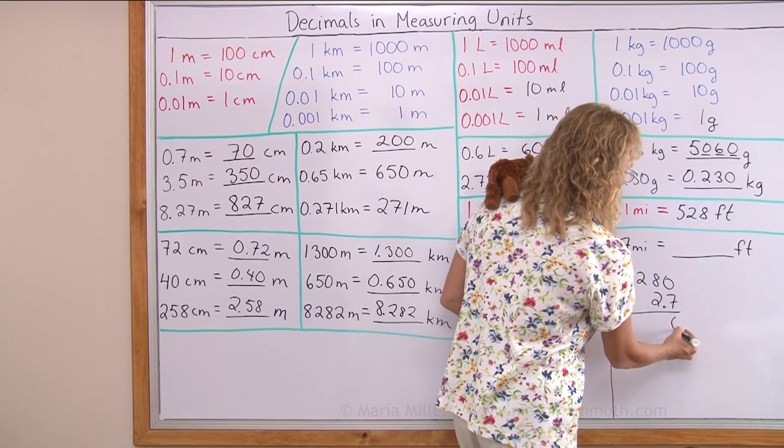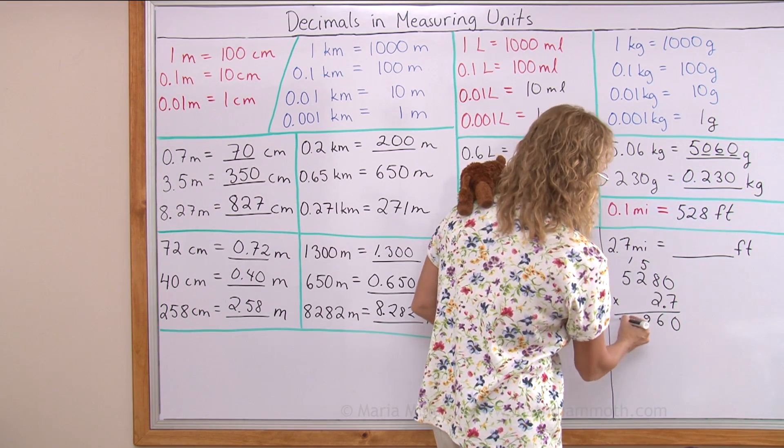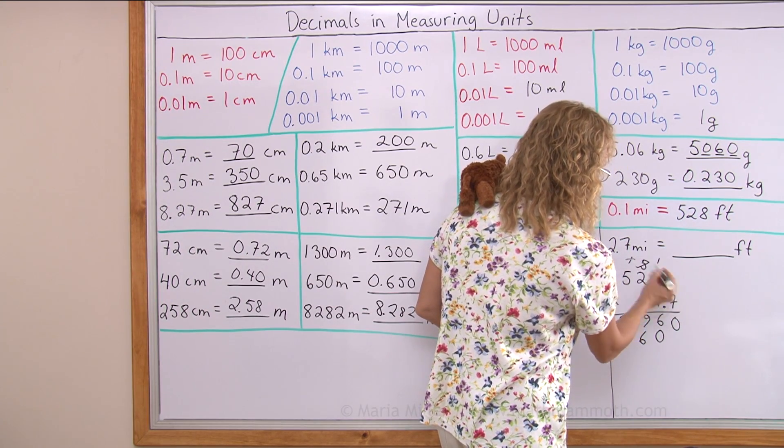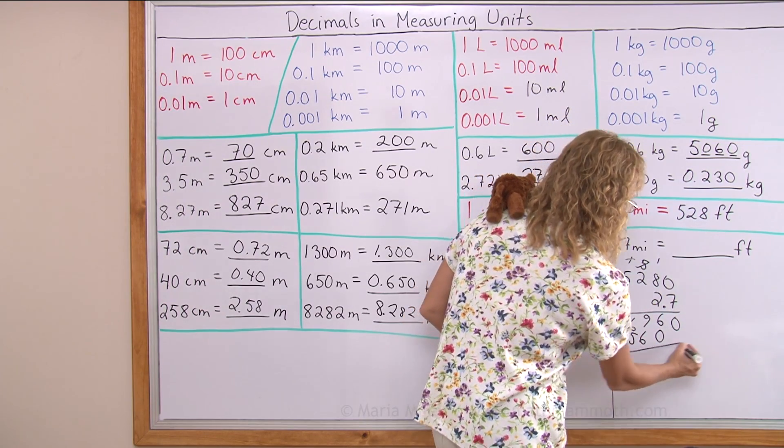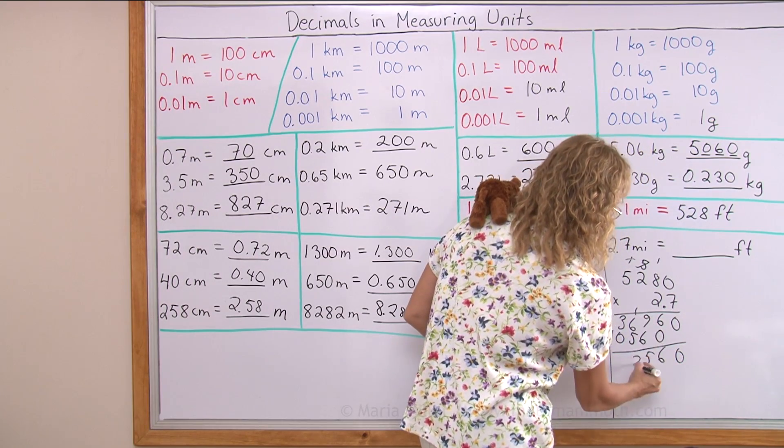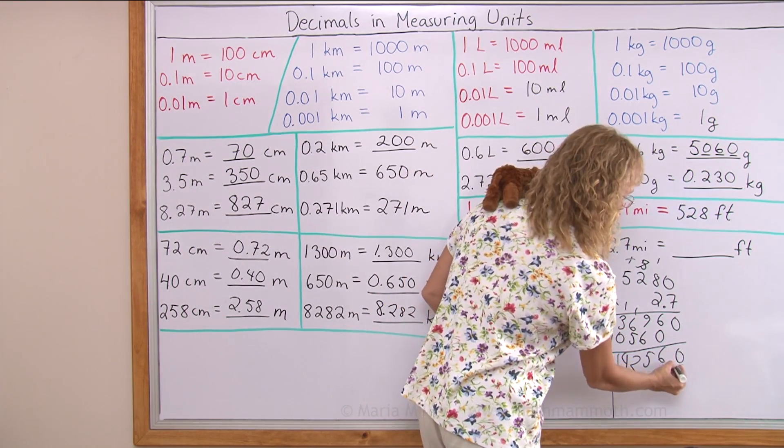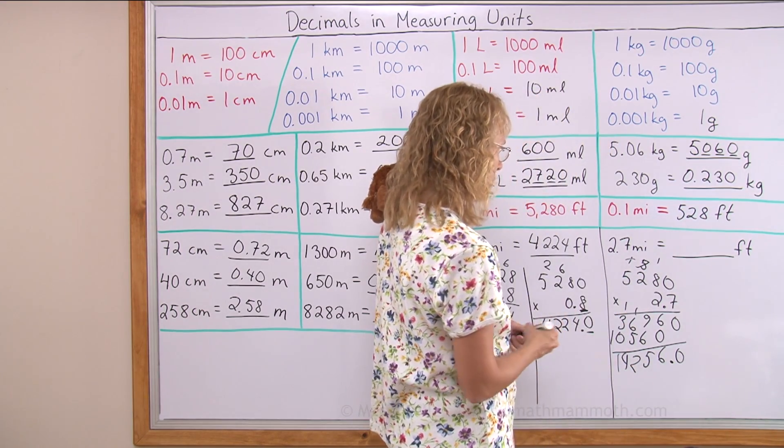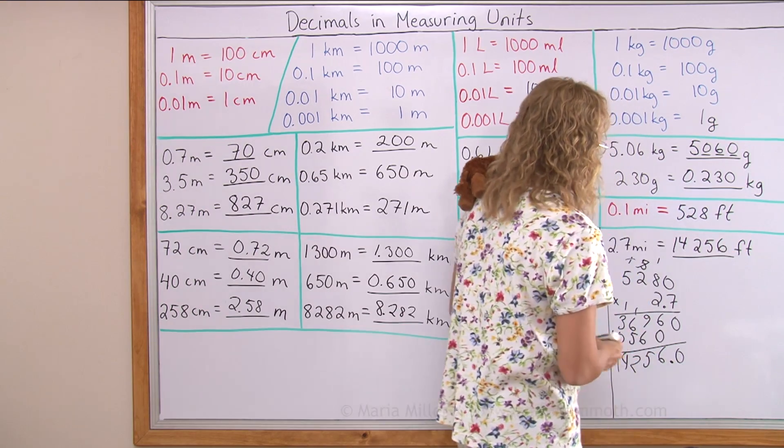7 times 0. 7 times 8. Then 14 plus 5. And then 36 here. And then 2 times 0, 2 times 8. 16. 2 times 2, that's 5. And 2 times 5, 10. And the addition. And now we put the decimal point in the answer over here. There's tenths here times the whole number. So tenths here too. 14,256 feet. And we're all done.